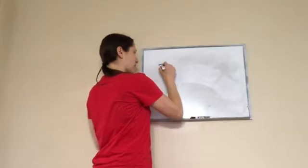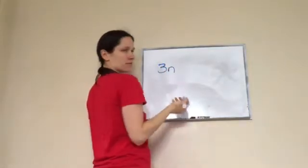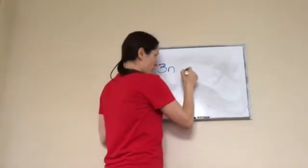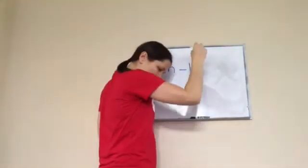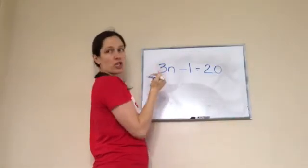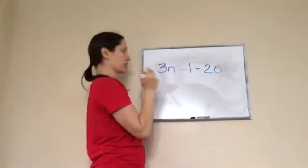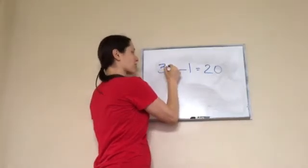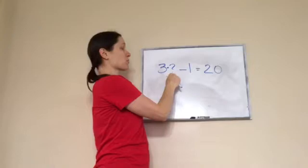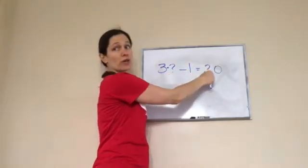So write this down: 3n minus 1 equals 20. n could be just a number. Do you remember what a letter and a number next to each other means? Multiply. So this really reads: 3 times what? No, 3 times what minus 1 equals 20.